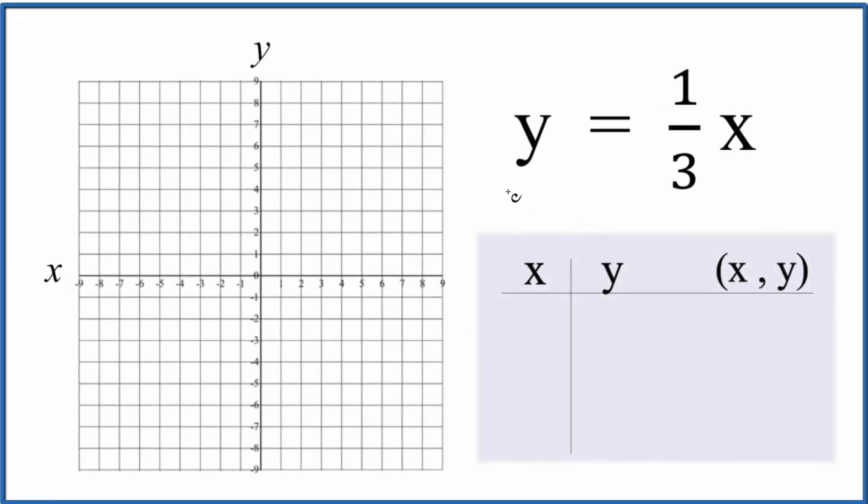Let's graph the linear equation y equals one-third x. We'll do it two ways. First, we'll put values in for x, figure out y, and then plot the points on the graph. Next, we'll check our work with the slope-intercept formula.